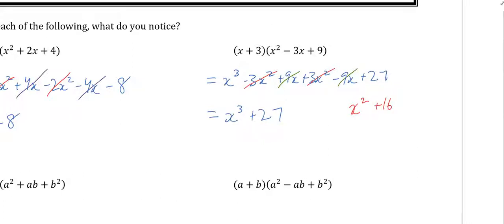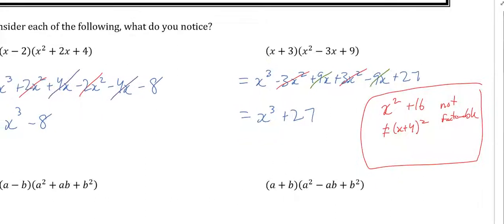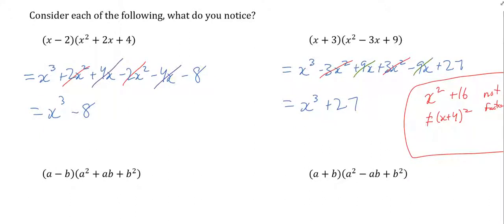So this is the same, but one thing that you hopefully learned is that you cannot factor a sum of squares. Because it does not equal x plus 4 squared—oh my gosh it is not factorable. Because if you did x plus 4 squared it would be x plus 4 times x plus 4 and there'd be a middle term. So sum of squares doesn't work.